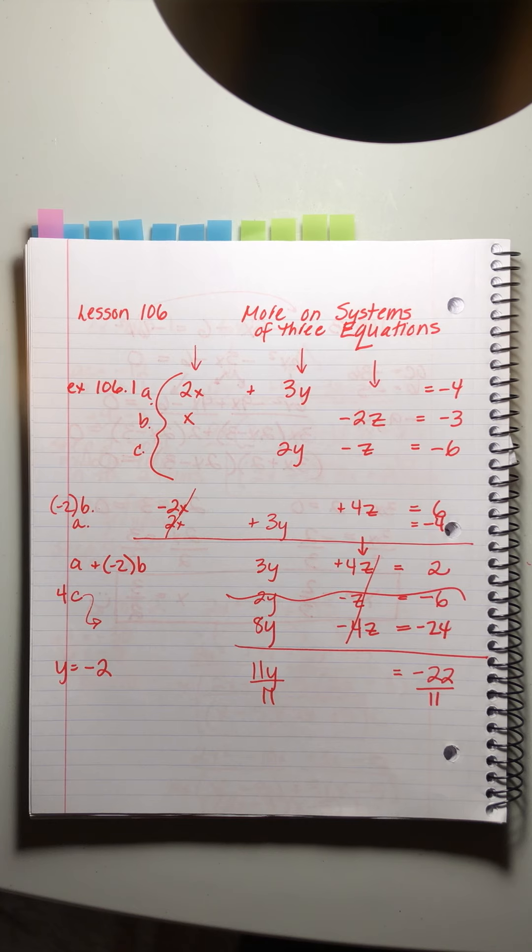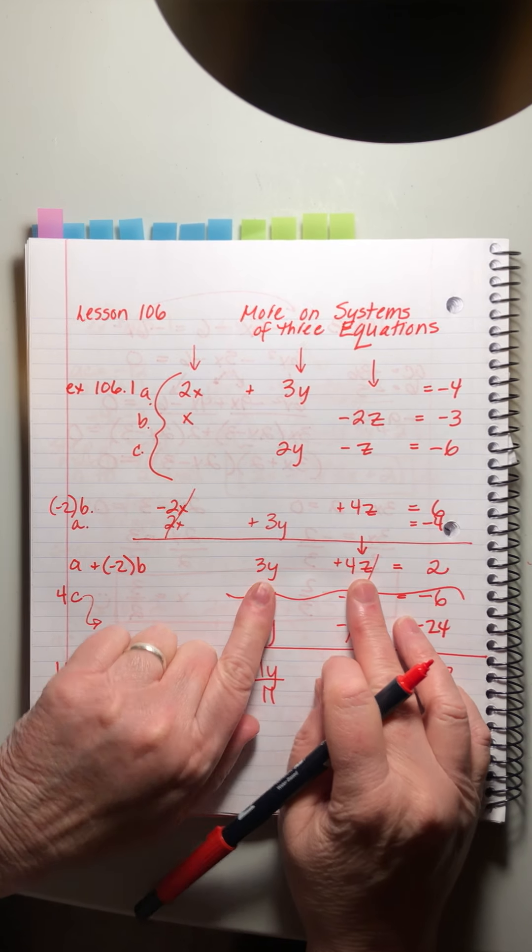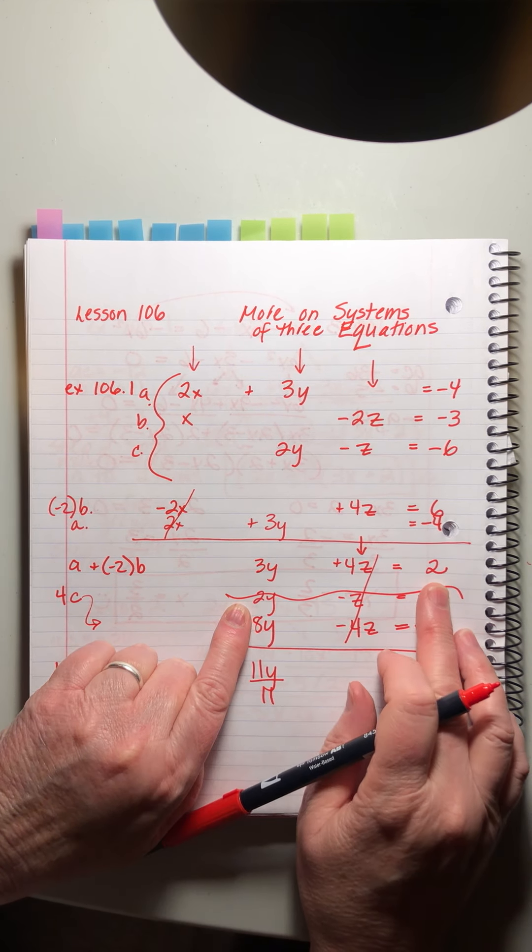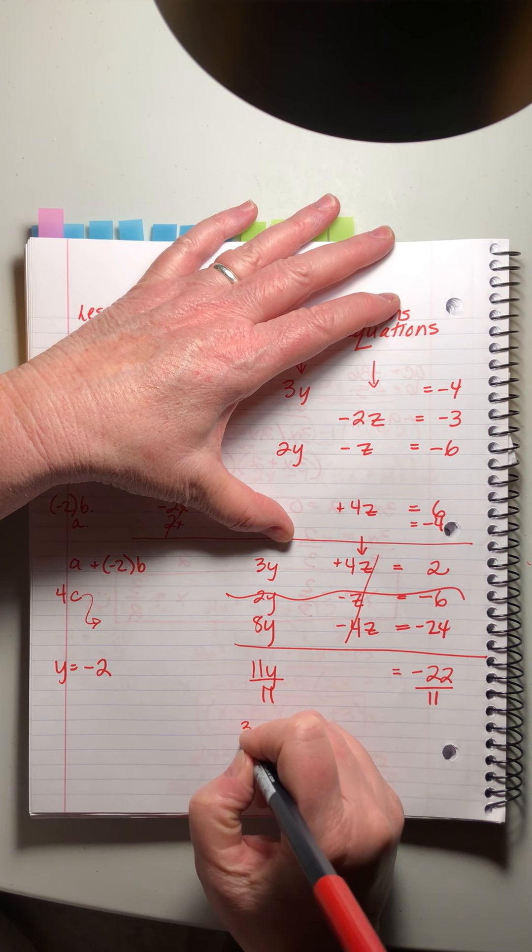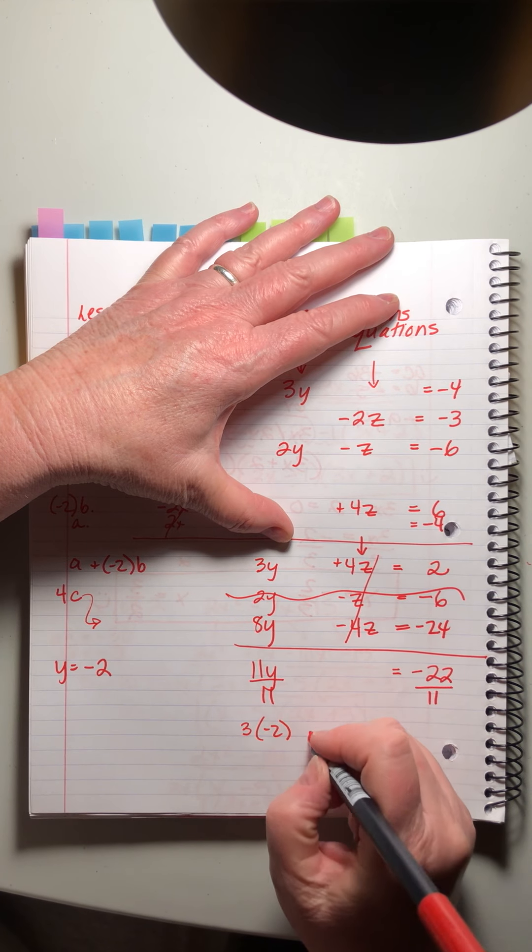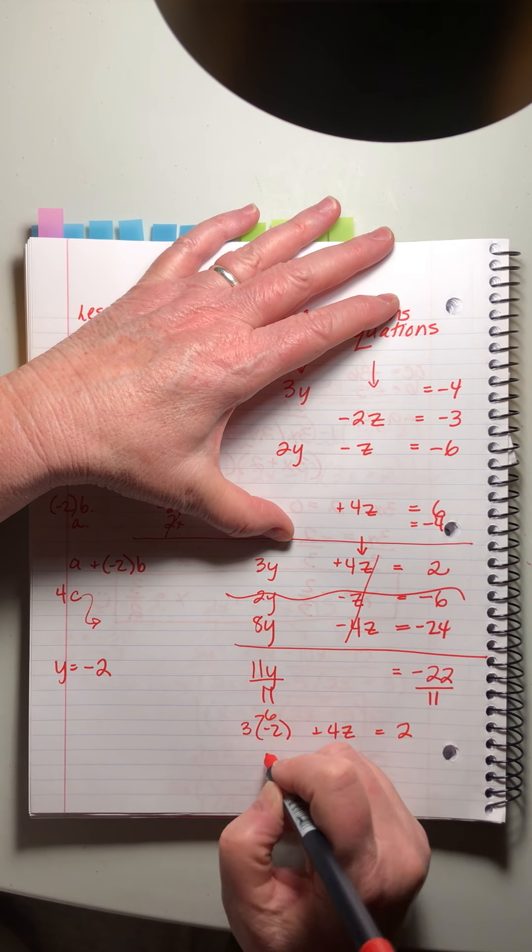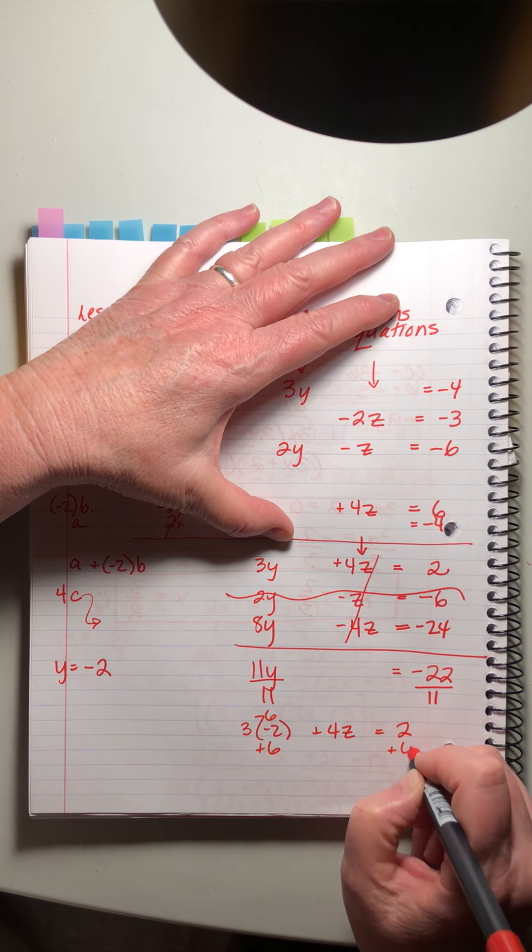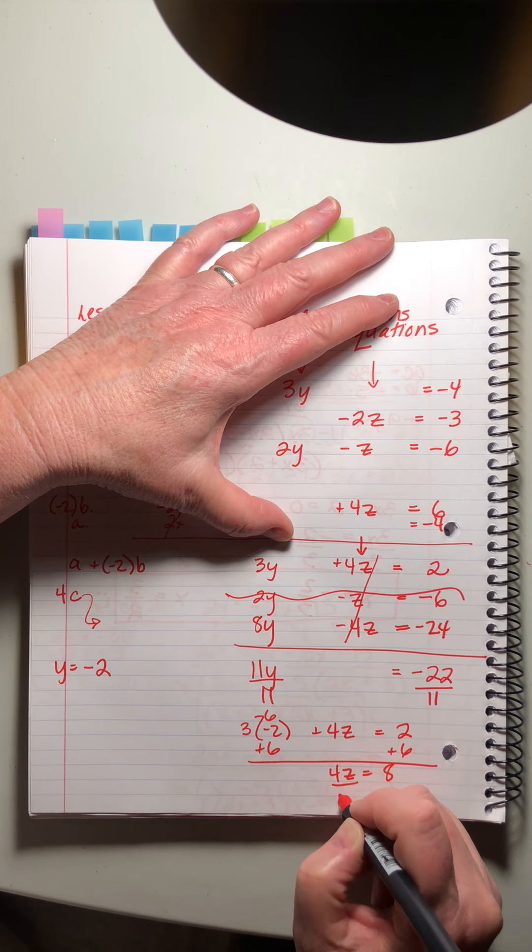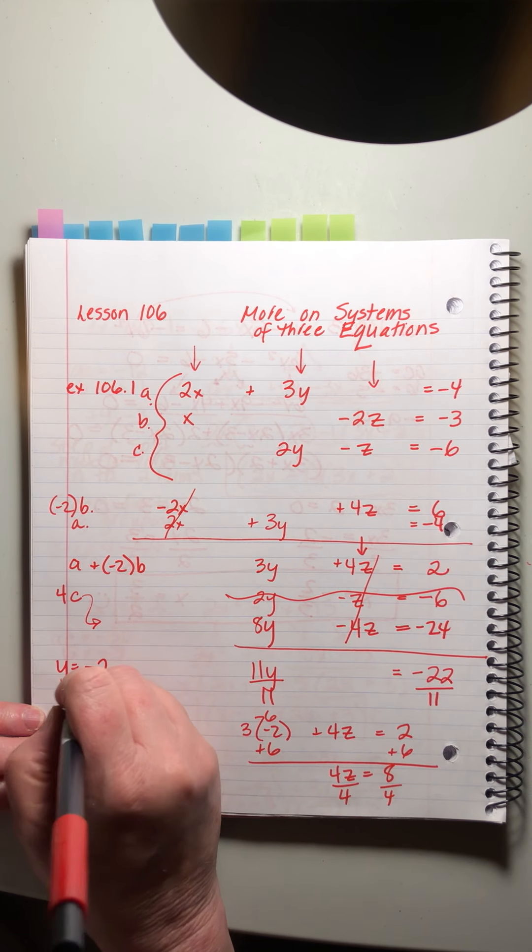And then what are we going to do? We're going to figure out how to work backwards and get the x and the z. Here I've got an equation with y and z with some nice cute little numbers. So let's use that. 3 times minus 2 because that's my value for y plus 4z equals 2. This is negative 6. So if I add 6 to both sides I get 4z equals 8. z equals positive 2.